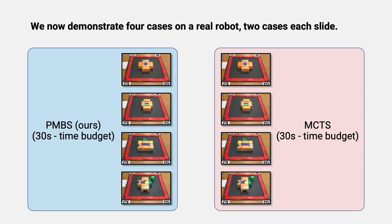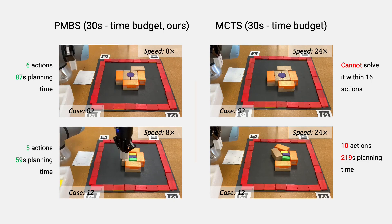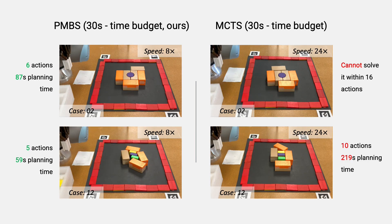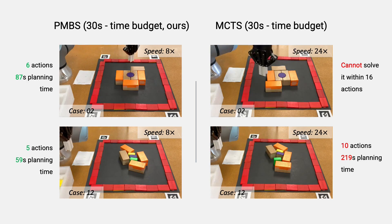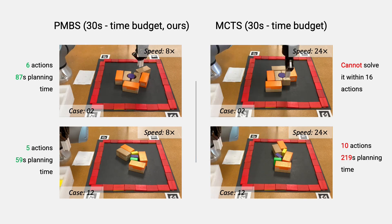Here we show some demo clips of a real robot. The proposed method, parallel MCTS with batched simulations, is on the left side. The right side is the standard single-thread MCTS. The model of objects is known, and planning is carried out in simulation.